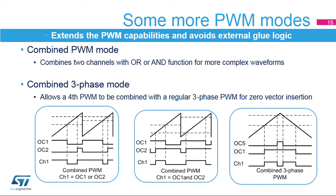The combined PWM mode allows a logic combination of two PWM signals generated by adjacent channels, output compare 1 and 2 or 3 and 4. The PWMs can be ORed or ANDed to create complex waveforms, allowing two periodic pulses with any pulse width and any phase relationship. The combined three-phase mode specifically targets three-phase motor control applications. Channel 5 of the timer can be combined with channels 1, 2, or 3 to insert a low state in the middle of a centered pattern PWM signal, greatly simplifying implementation of low-cost current sensing using zero-vector insertion.